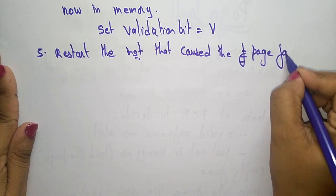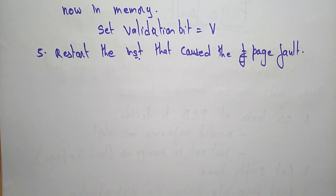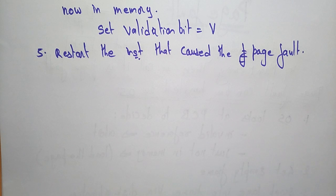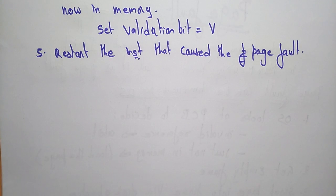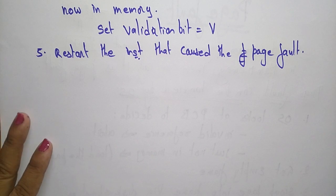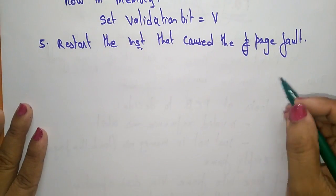So these are the steps to follow whenever a page fault occurs. The demanded page is not present in main memory, then the page fault occurs, and to overcome the page fault we follow these steps. Let me now explain the page fault handling with a diagrammatic representation.